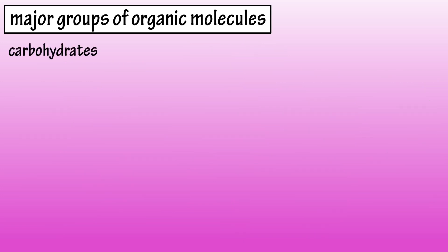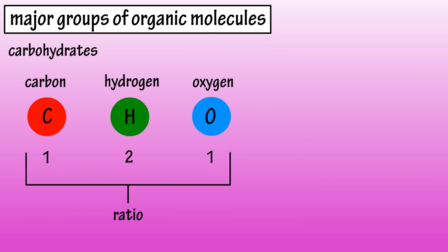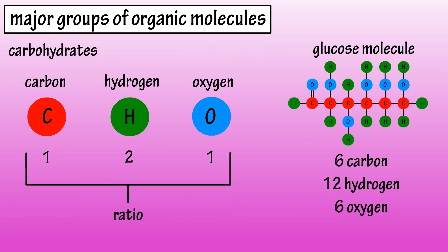All carbohydrates contain carbon, oxygen, and hydrogen, usually in a ratio of 1 to 2 to 1, as you can see in this linear model of a glucose molecule, glucose being one of the most important smaller or simpler carbohydrates.